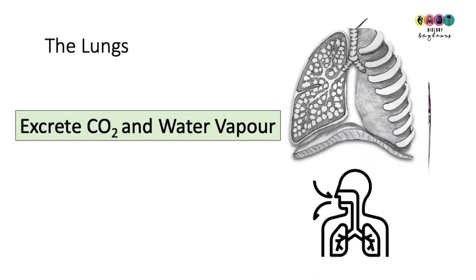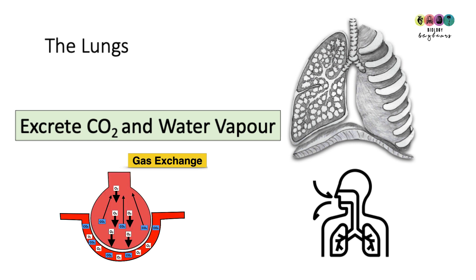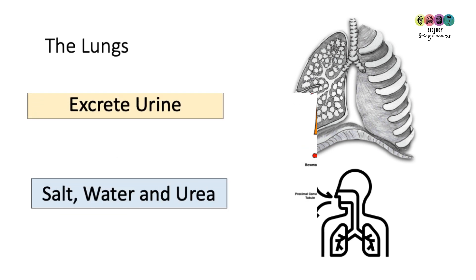The lungs excrete carbon dioxide and water vapor. Carbon dioxide enters the lungs from the blood capillaries and passes through the walls of the alveoli into the lungs, where it is exhaled.